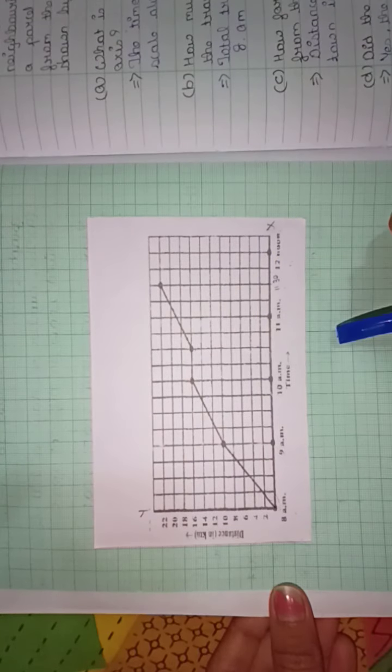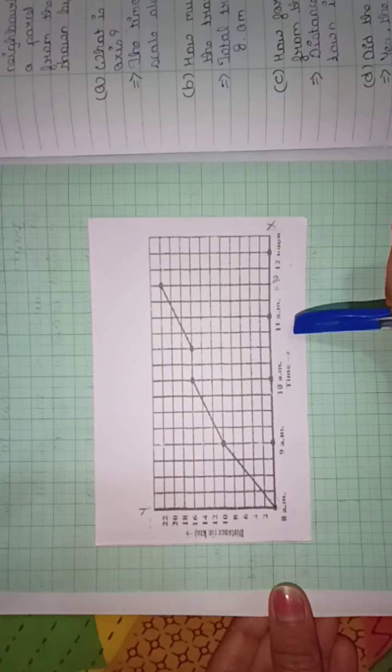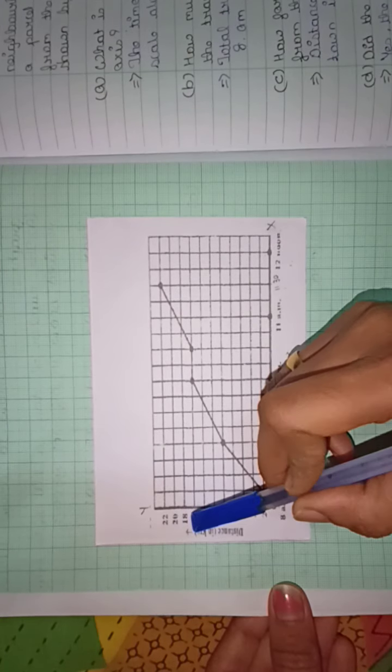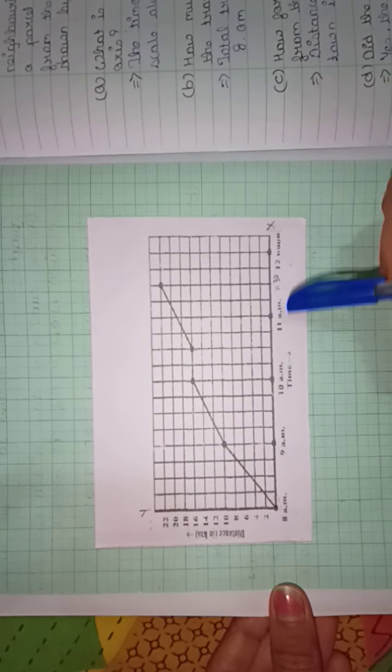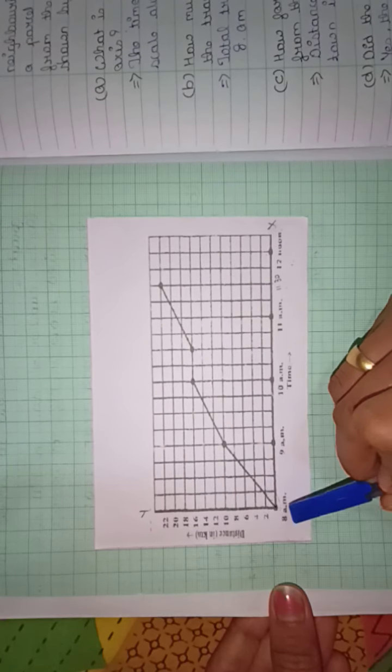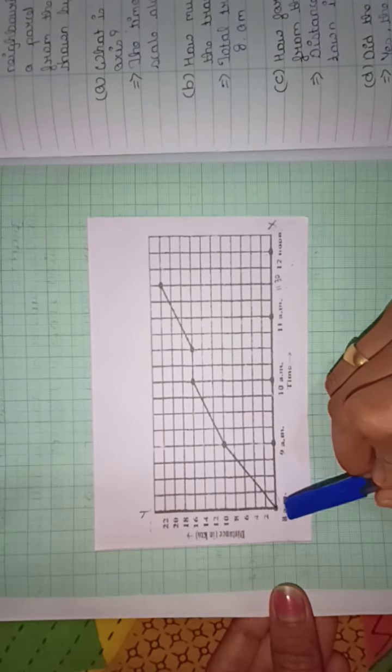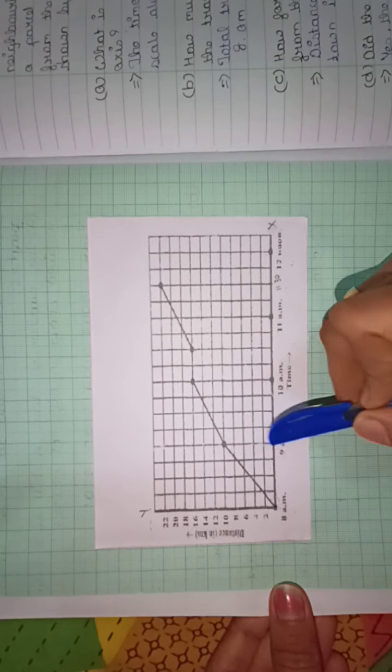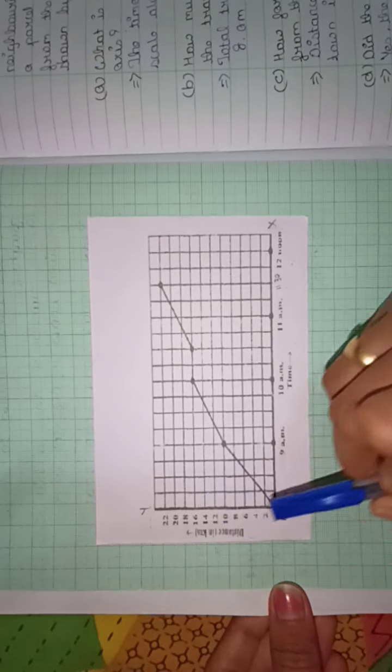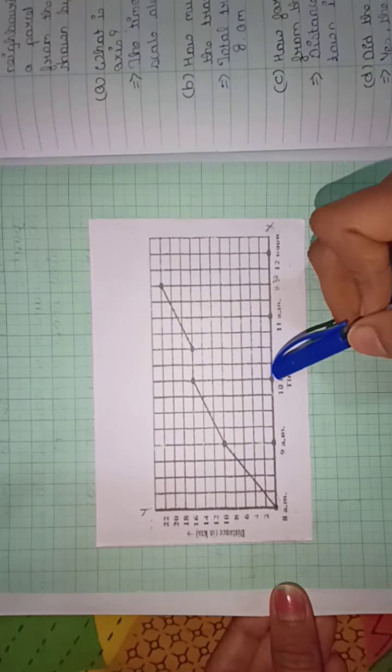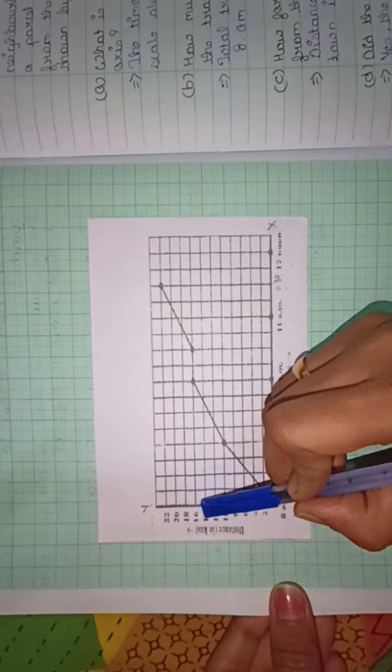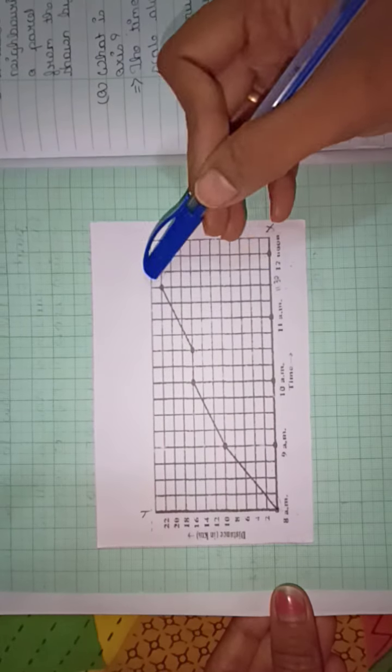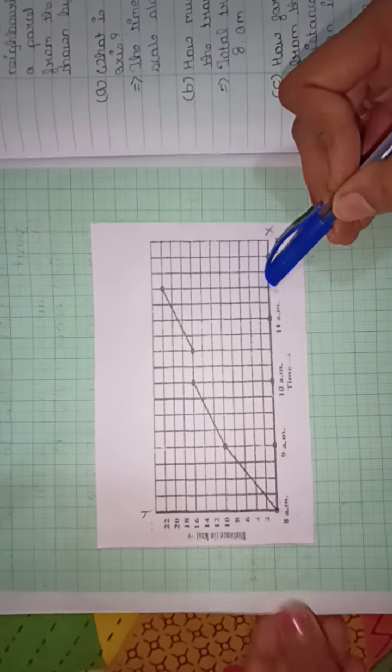Here the graph is given where this is the time duration and here in the y-axis distance covered in particular time slot is given. So, at 8 a.m. the parcel has just started and the distance covered at 9 a.m. is 10 kilometers. Same way at 10 a.m. distance covered is 16 kilometers, then 11 a.m. and then till 11:30 it is going.